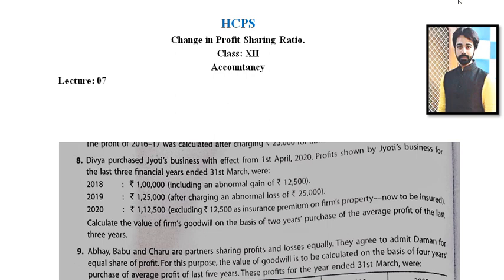You can see Question Number 8 on the screen. The question involves purchasing Jyoti Business with effect from 1st April 2020. Profit shown by Jyoti Business for the last three financial years — 2018, 2019, 2020 — is given. Calculate the value of the firm's goodwill on the basis of two-year purchase of average profit of last three years. We need to calculate actual profit, which is not directly available for any of the three years.